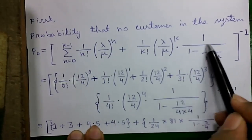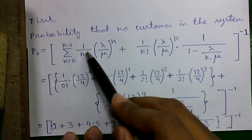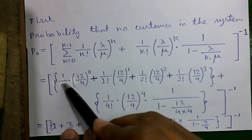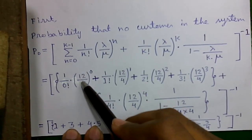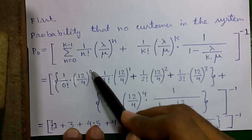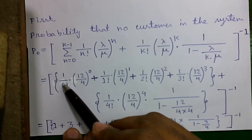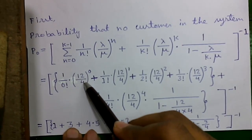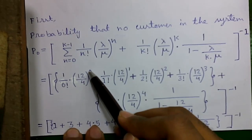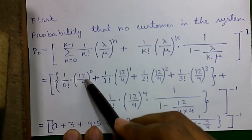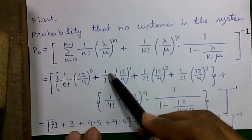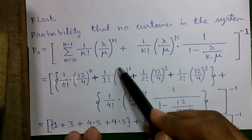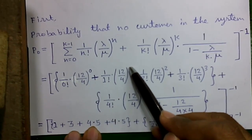For n=0: 1/0! × (12/4)^0 = 1/1 × 3^0 = 1×1 = 1. For n=1: 1/1! × (12/4)^1 = 1 × 3^1 = 3.